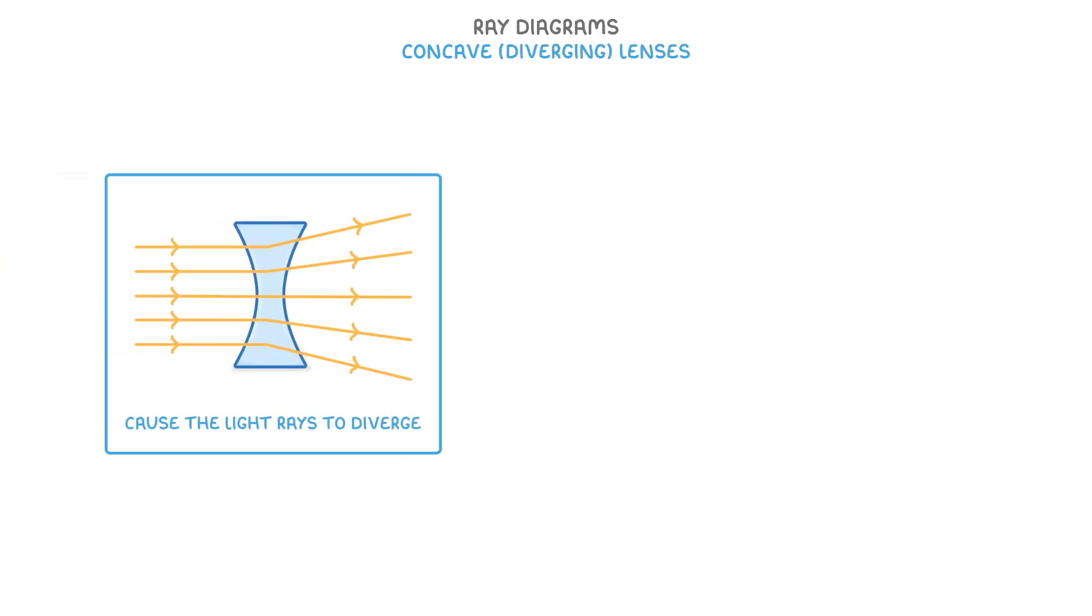Let's start with concave, or diverging lenses, which are the ones that cause the light rays to diverge and spread out.